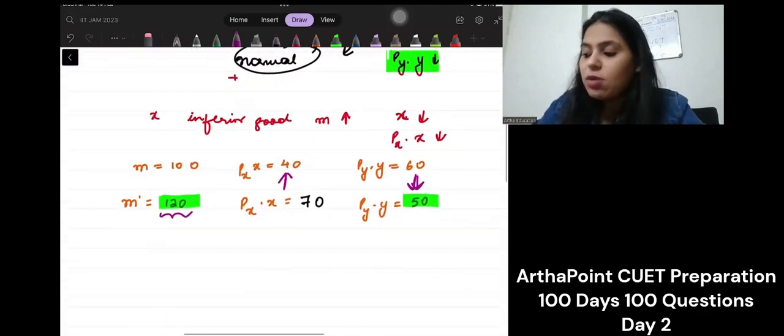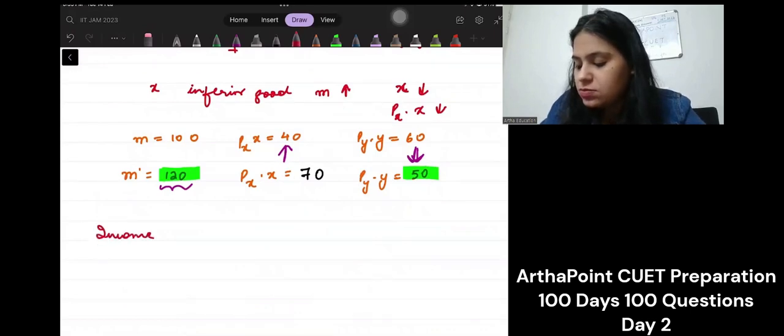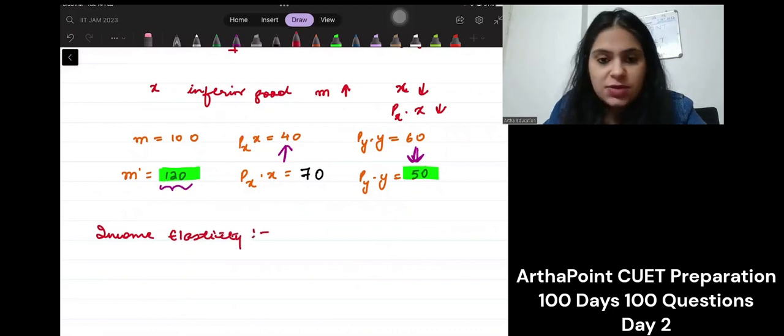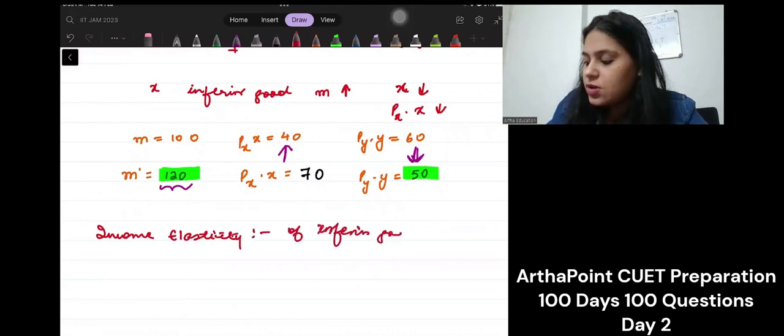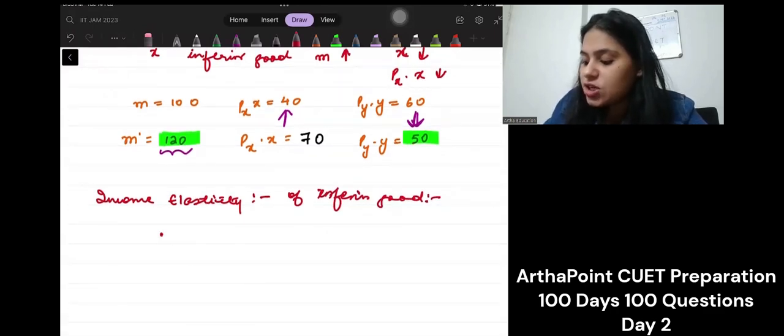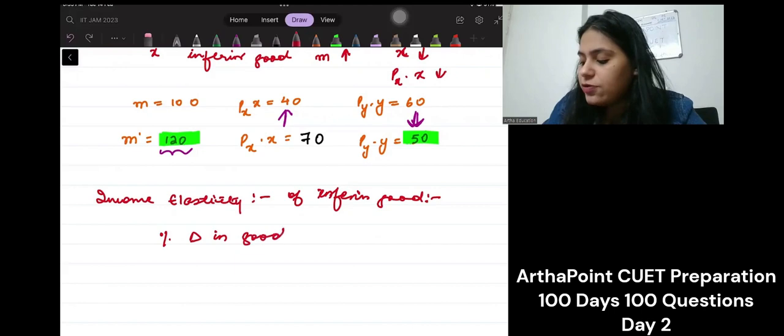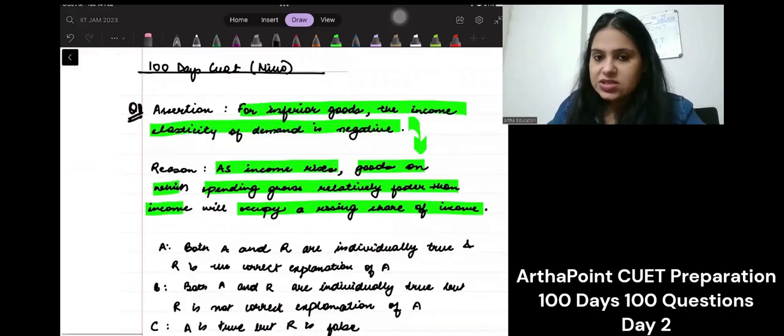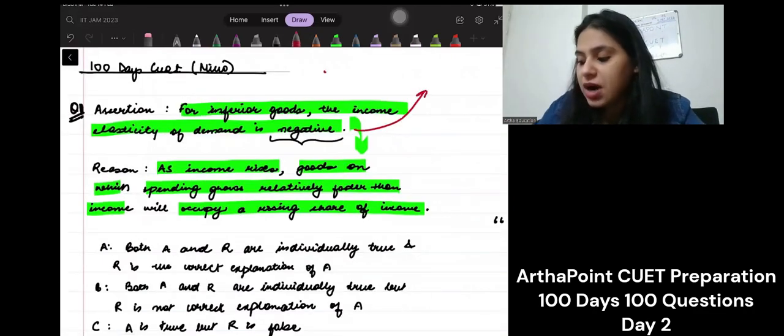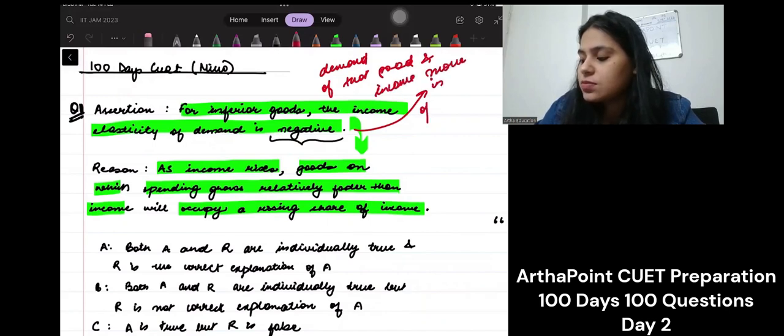Now when I talk about the income elasticity of an inferior good, what is income elasticity? It tells me the percentage change in the demand of the good due to percentage change in income. When income increases, the demand of that good decreases. They are negatively related. So income elasticity is negative. Why? Because the demand of that good and income moves in the opposite direction.